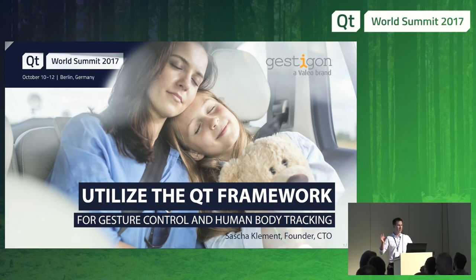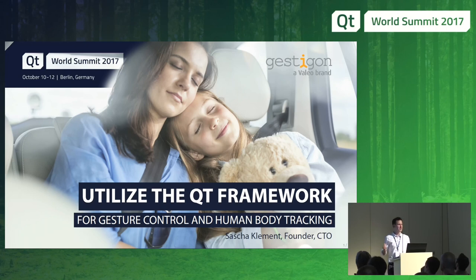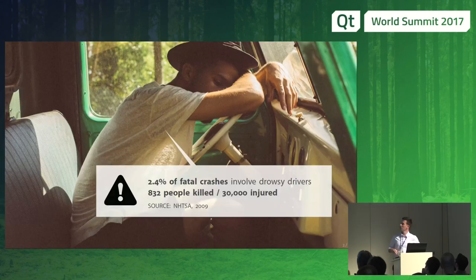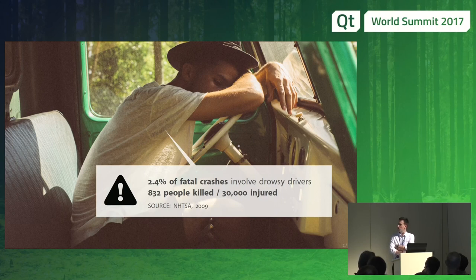We're not talking about an infotainment system or a cluster. We're talking about understanding if the driver and passengers are safe in the car, if they pay attention to the road, if the hands are on the steering wheel, if driver and passenger can be brought in a safe way from A to B. This image visualizes the perfect world we want to achieve — we want to understand if your wife and daughter can get safe from A to B while sleeping. When you look into what happens on the streets and how many accidents we have per year, we know that 2.4% of fatal crashes are caused by drowsy drivers.